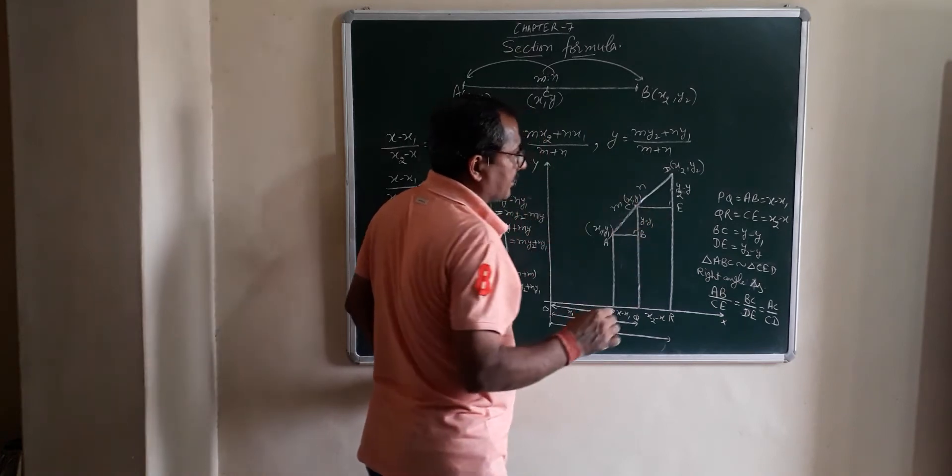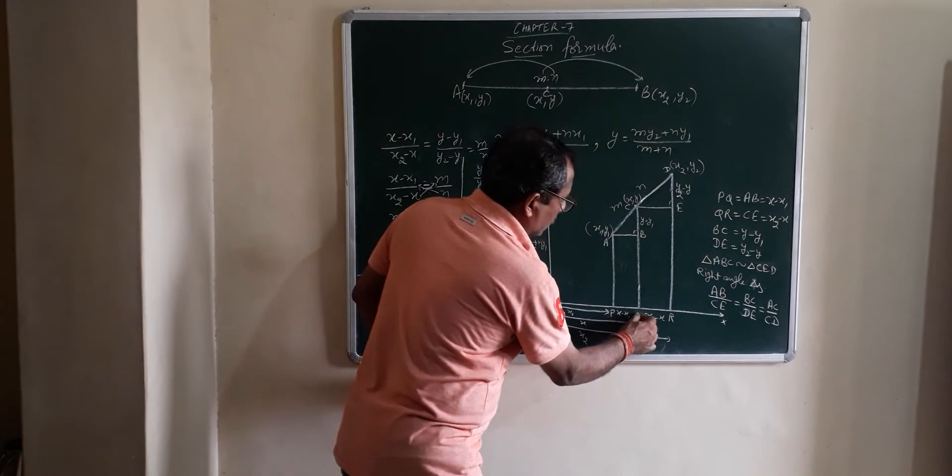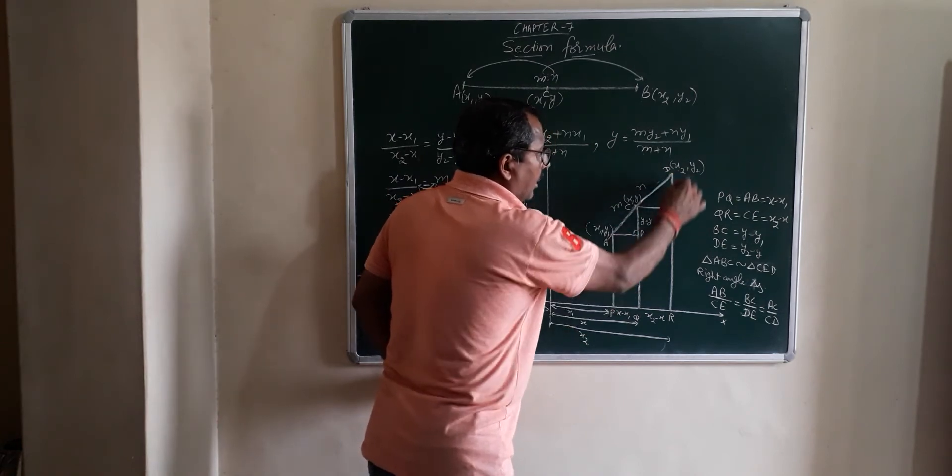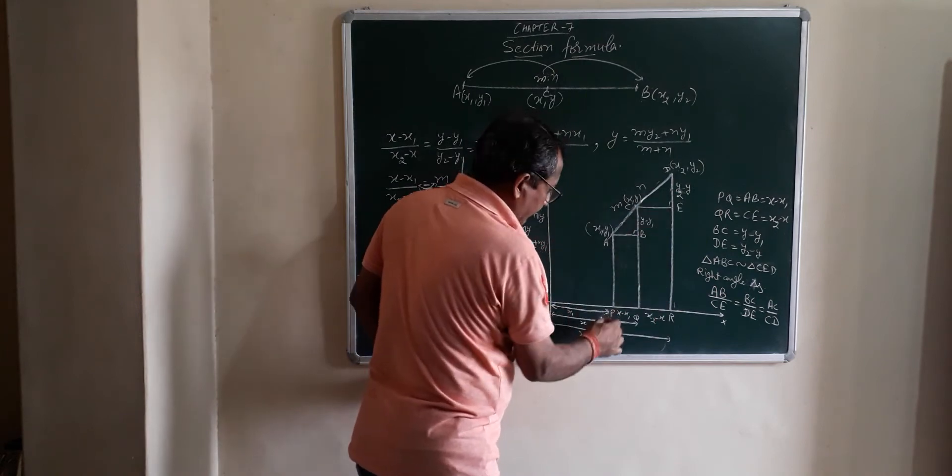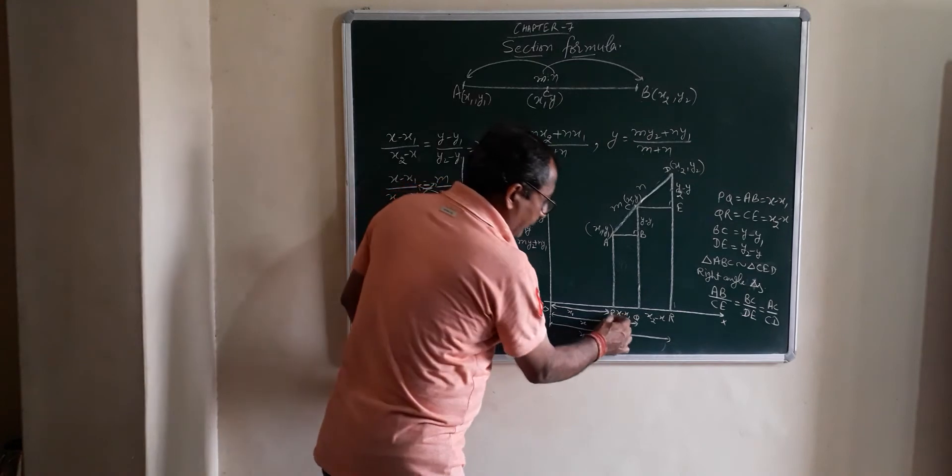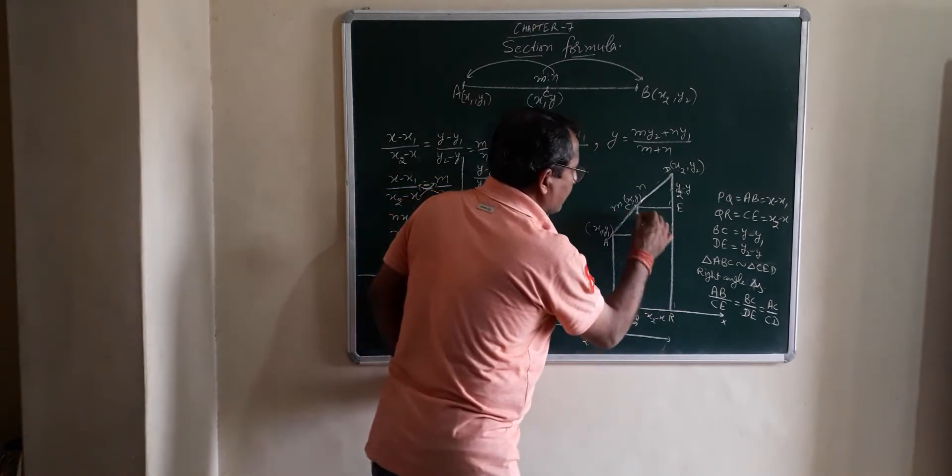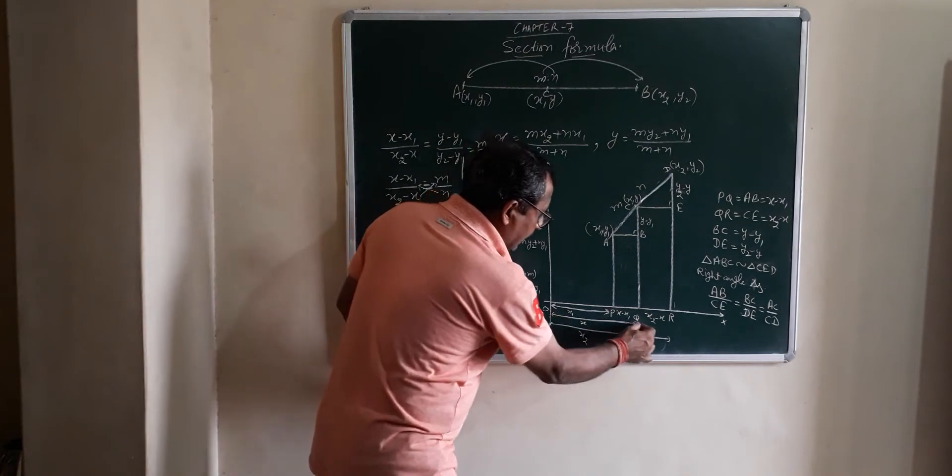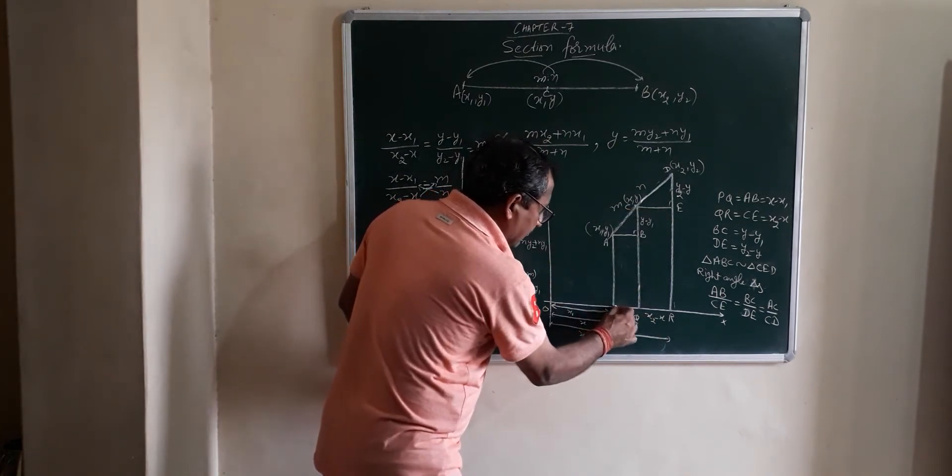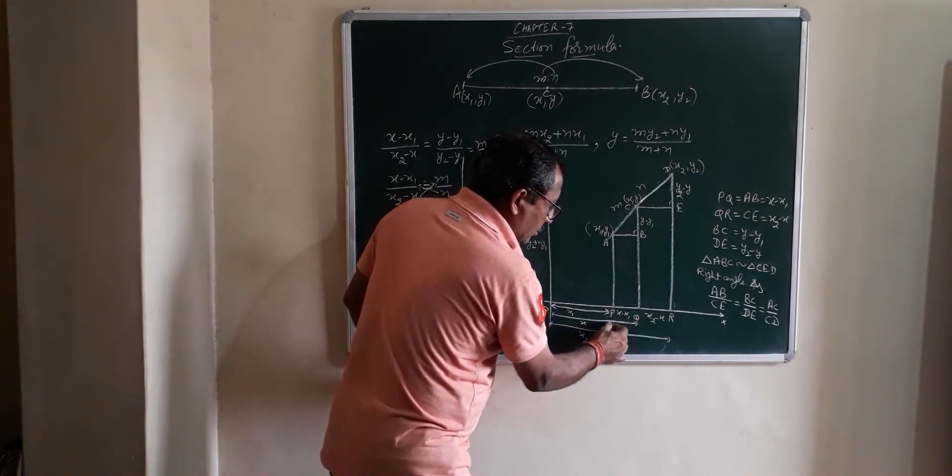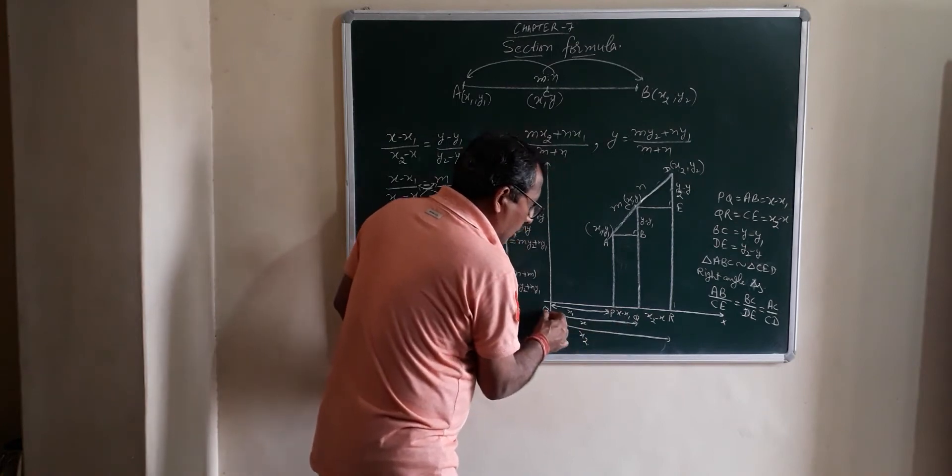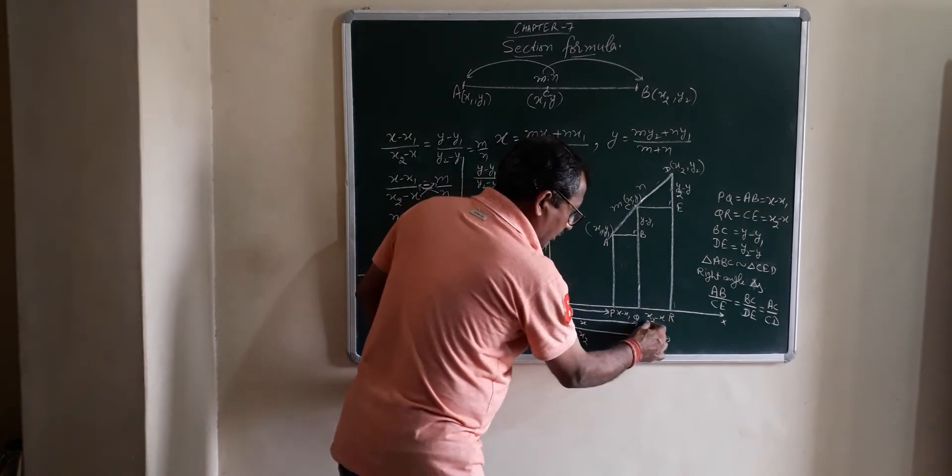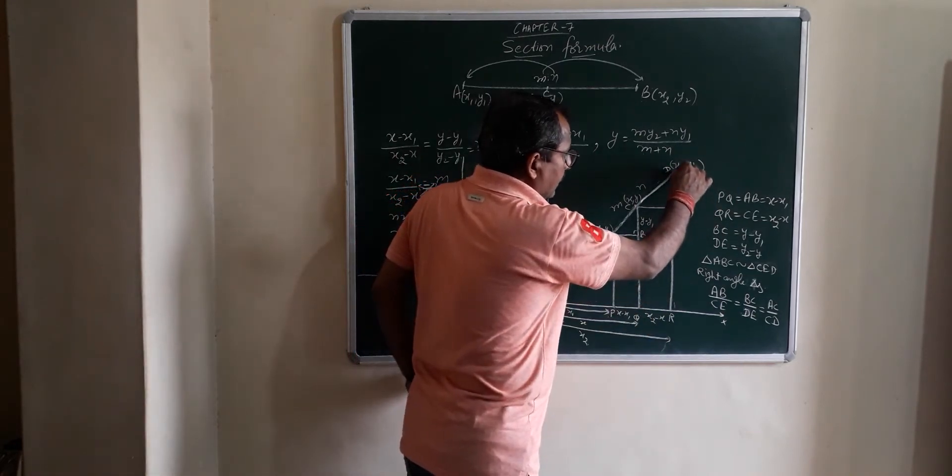Now let's see how the ratio is converted. Now P, Q is equal to AB. And Q, R is equal to CE. Find out P, Q. P, Q is equal to, now P, Q is equal to X minus X1.